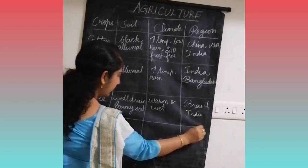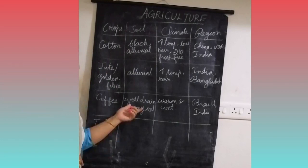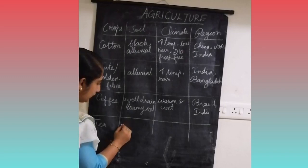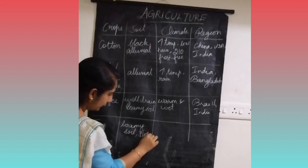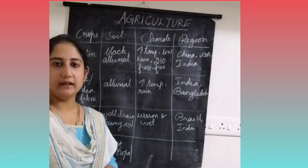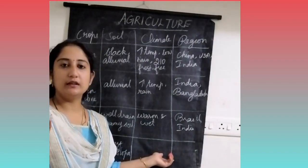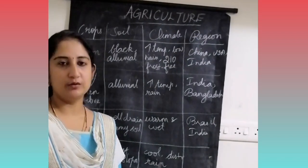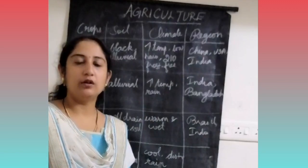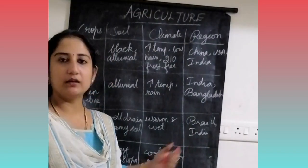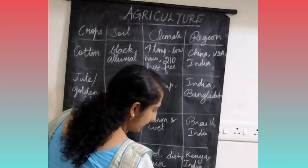The next beverage crop is tea. Tea requires well-drained, loamy soil with gentle slopes. Coming to the climate, tea requires cool climate and well-distributed rainfall throughout the year, so that new leaves come out — since the leaf is the yield you get from tea, it requires a lot of labor. The places where tea is cultivated are Kenya, India, and China.